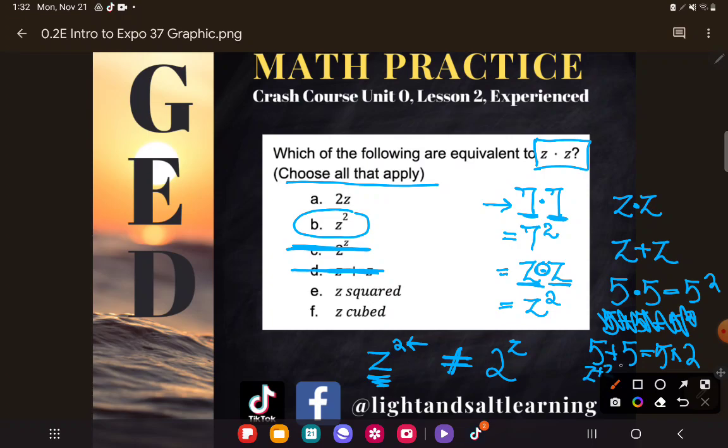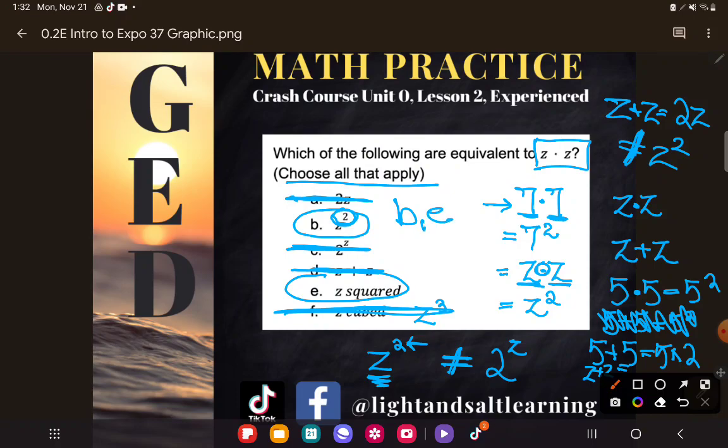It's the same when you have letters. Z plus Z is the same as 2Z, but that's definitely not the same as Z squared. So let's rule out this 2Z. And now you keep hearing me use that language, Z squared. What does that word square mean? Well, that's just another way of saying the exponent 2, so E is also correct answer. But be careful, Z cubed is not the same. A cube is an exponent of 3. So the two correct answers here are B and E.